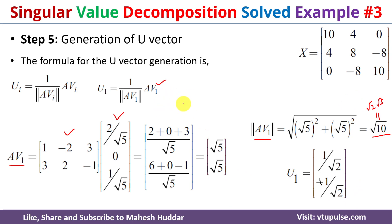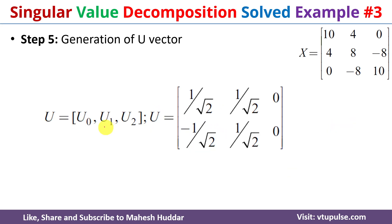We find u2 using the third eigenvector phi_2, which gives 0. Once we find u0, u1, and u2, we form the U matrix where the first column is u0, the second column is u1, and the third column is u2.